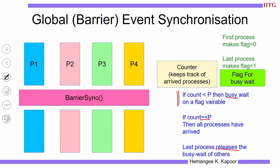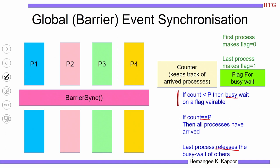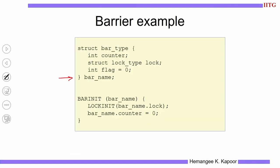With this understanding of how the barrier works, we will see some pseudo code. The barrier is implemented using a structure called barrier_name, containing a counter, a flag, and a lock. The flag is used for busy waiting — every process reads the flag, so no problem there. But the counter must be changed by every process, hence you need a lock to change it in a mutually exclusive manner.